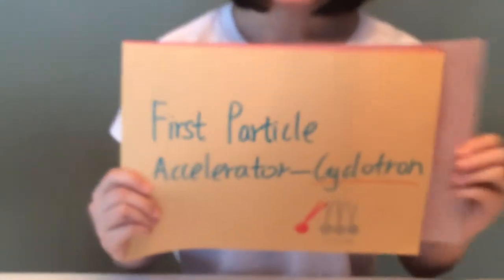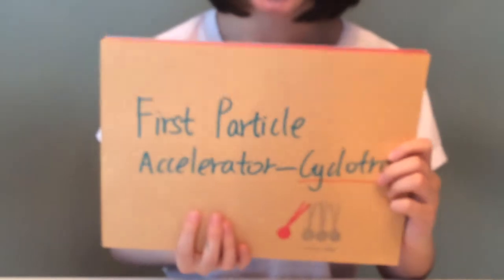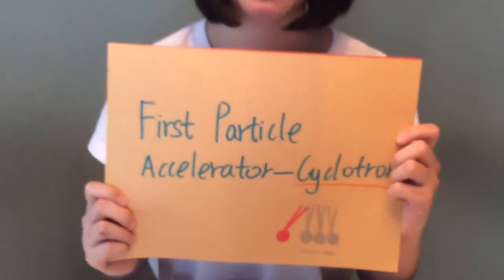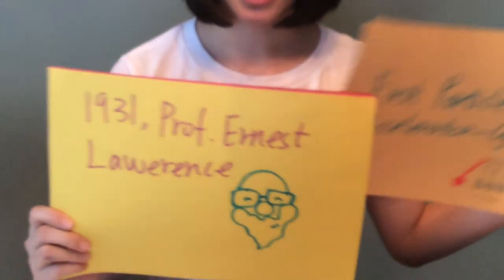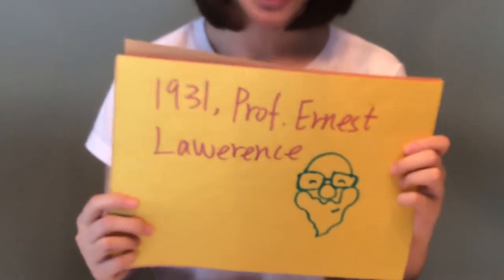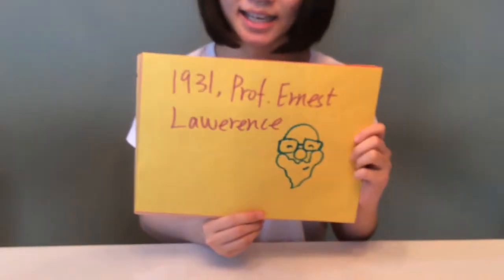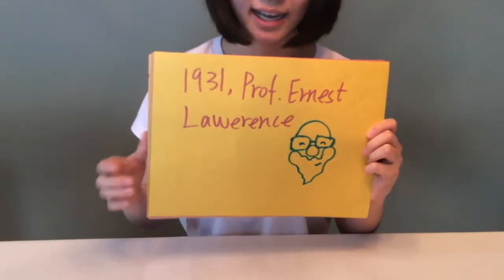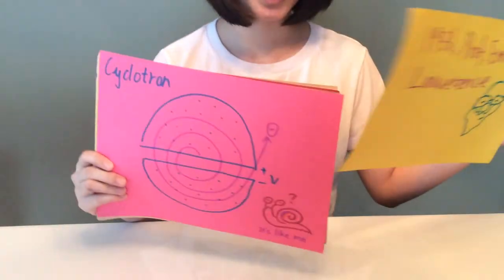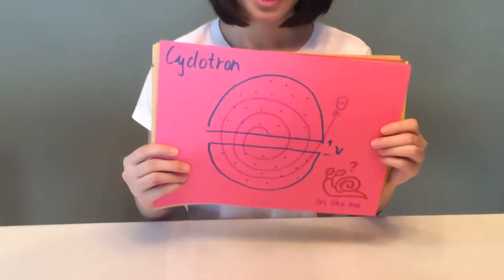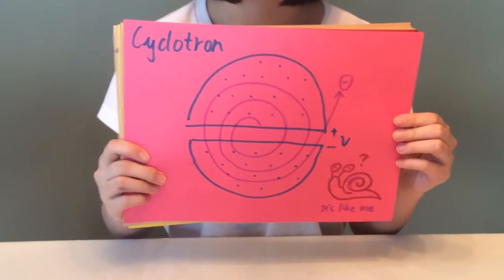The first particle accelerator is a cyclotron, which was built by Professor Ernest Lawrence at the University of California, Berkeley in 1939. The cyclotron is basically made of two D-shaped plates with a small gap between them.